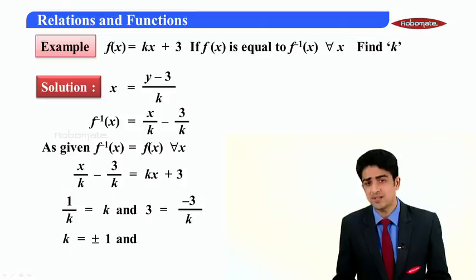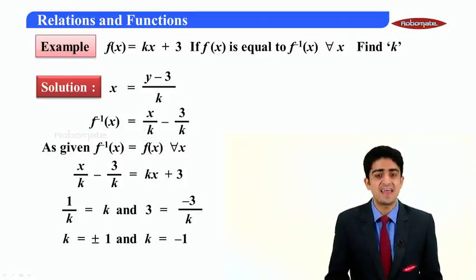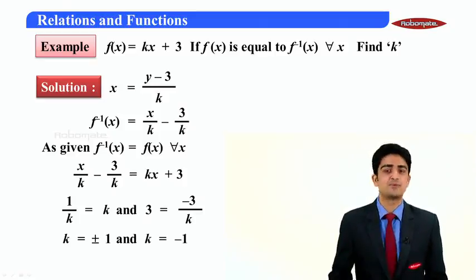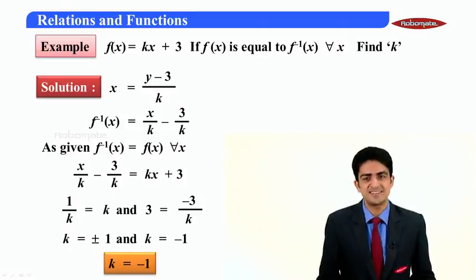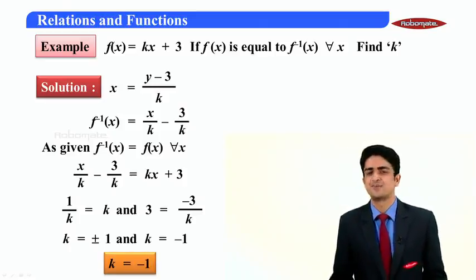So we get k equal to ±1 from first equality and k equal to -1 from second equality. As there is 'and' in between them, so taking intersection we get k equal to -1.